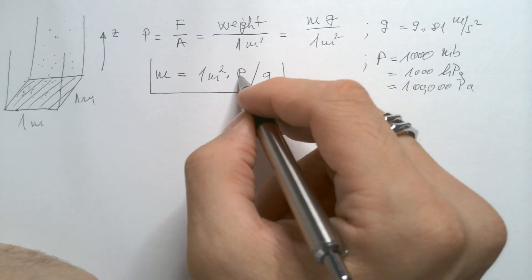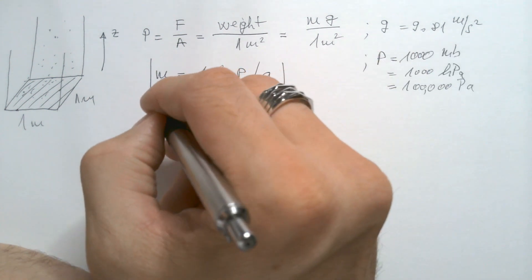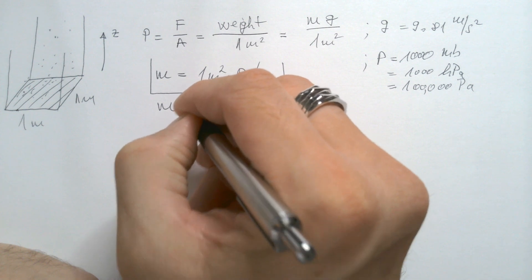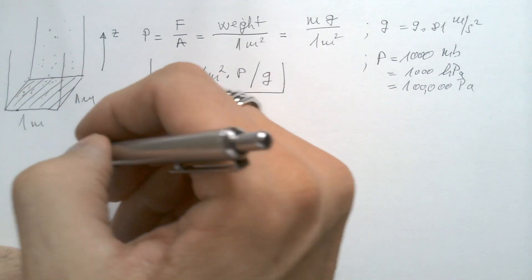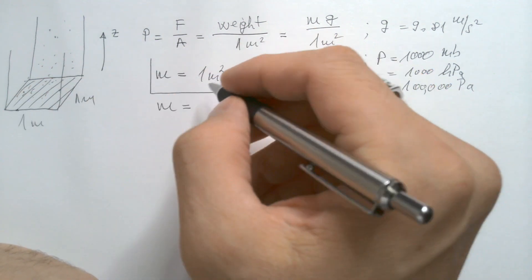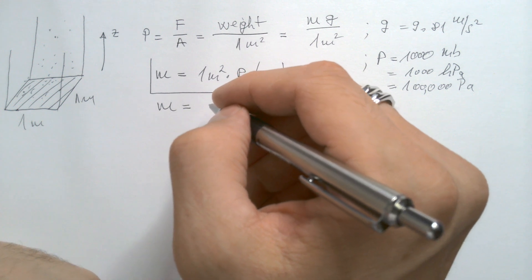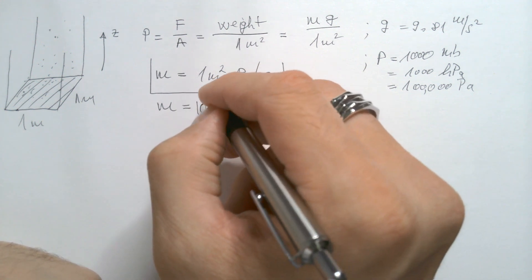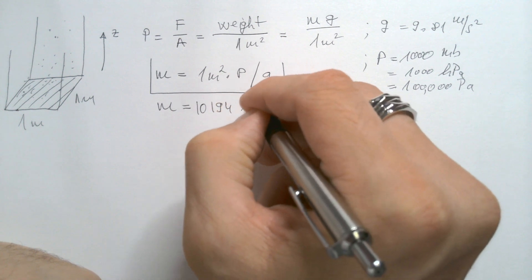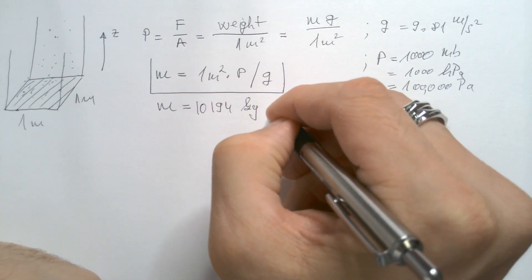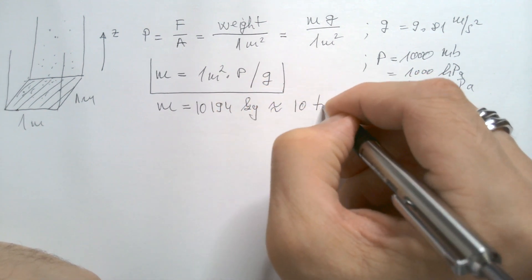If you plug in this number here together with G, you will get that mass of the air in a one square meter column is approximately 10 tons, 10,194 kilograms, and that is approximately 10 metric tons.